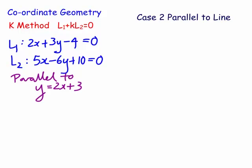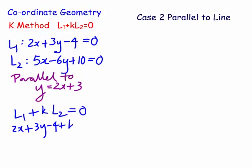Now let's look at case 2. In the second case, we need to find the equation of the line through the intersection of line 1 and line 2 as before, but now instead of going through a point, it's actually going to be parallel to another line — y equals 2x plus 3. The gradient of this line is 2. We write line 1 plus K times line 2 equals zero. We substitute the equations: 2x plus 3y minus 4 plus K lots of 5x minus 6y plus 10 equals zero. We haven't got a point to substitute, but we have a gradient, so we need to find the gradient of this expression in terms of K and equate it to 2.